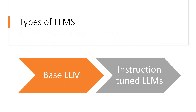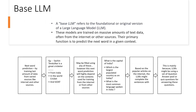Now, types of LLMs. We have two types to discuss: base LLM and instruction tuned LLM. A base LLM refers to the foundational or original basic version of the LLM. These models are generally trained on a massive amount of text data, often taken from the internet or other similar resources. The primary task that a base LLM performs is to predict the next word in a given context — next word prediction is the predominant work we use base LLM for.